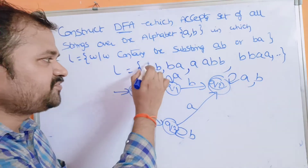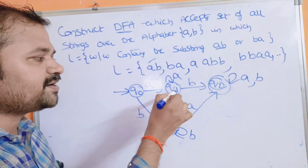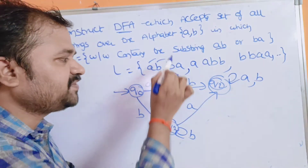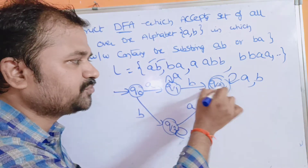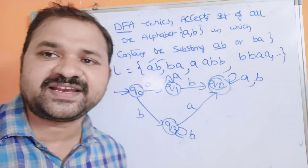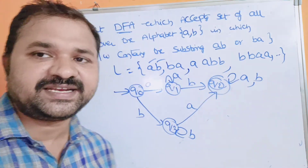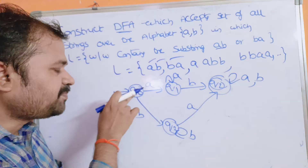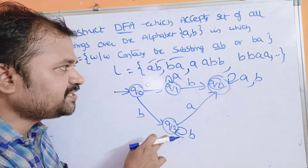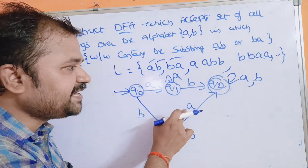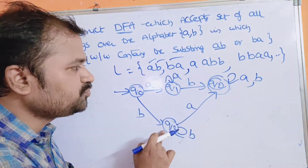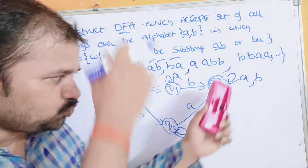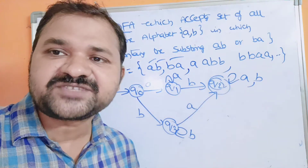Let us verify the DFA with examples. For AB: apply A on Q0 → go to Q1, apply B on Q1 → go to Q2. Q2 is the final state, so AB is accepted. For BA: apply B on Q0 → go to Q3, apply A on Q3 → go to Q2. Q2 is the final state, so BA is accepted.